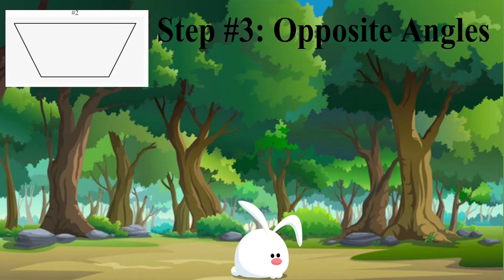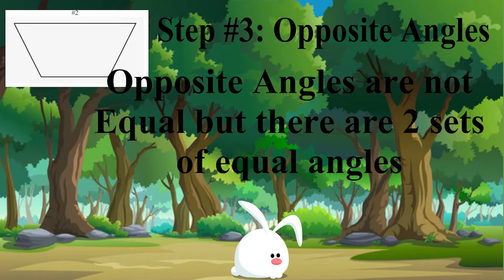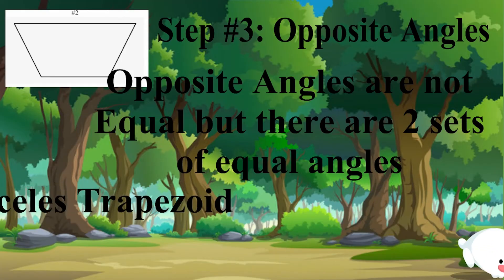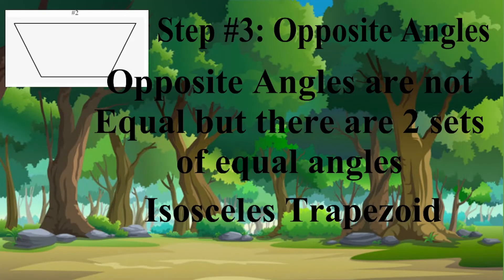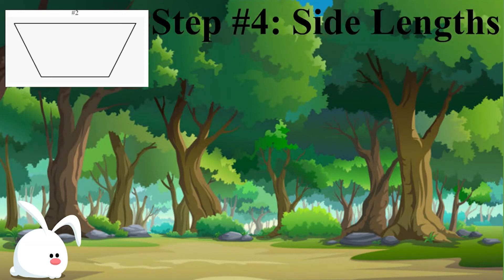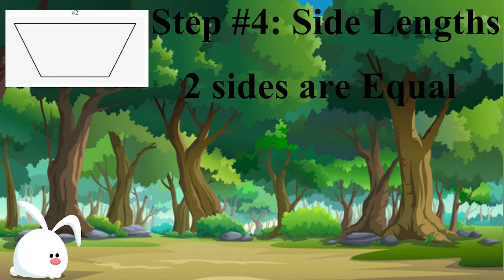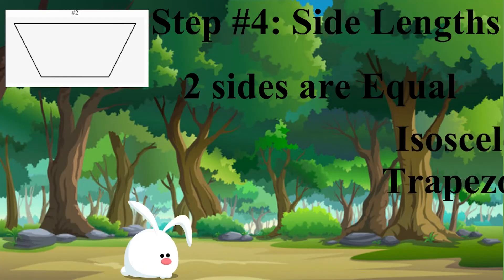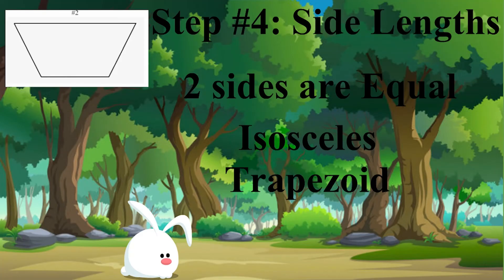Let's look at the opposite angles of this shape. Now the opposite angles are not equal, but there are two sets of equal angles, which is a factor of an isosceles trapezoid. We can already start to realize that this may be an isosceles trapezoid — we just need to confirm. So let's look at the side lengths. Obviously the top and bottom are different, but let's look at the left and right sides. Those two sides are equal. So we have two sets of equal angles and two equal non-parallel sides — in fact, this is an isosceles trapezoid.